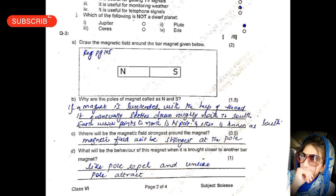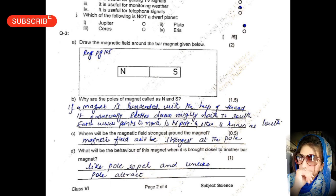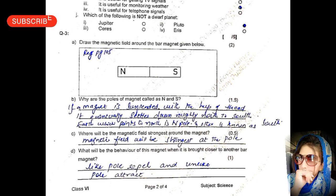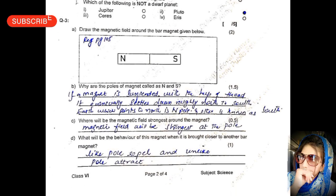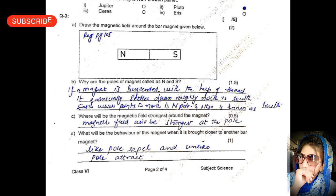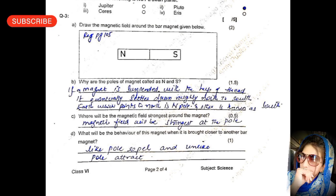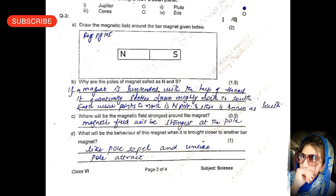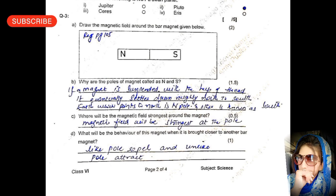For question number three: draw the magnetic field around the bar magnet given below. You can refer to page number 104 or 105 for the answer. Why are the poles of the magnet called N and S? You can answer this question; a suggested answer is given but you can write in your own words as well.